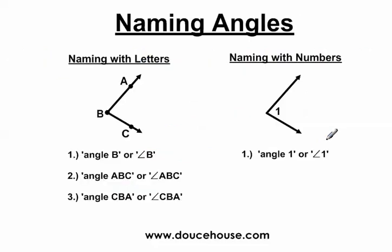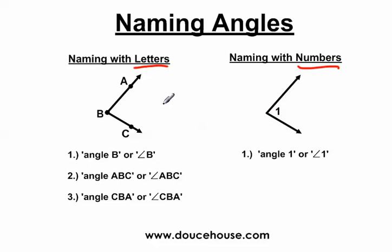Now let's jump into how to name angles. There are two ways: one is to use letters. In this case we have letters A, B, and C representing point A, point B, and point C. You can also use numbers to name angles — that's the easier way. But on many problems you'll have letters naming angles as well, so it's really important you understand this because it can be a little confusing.